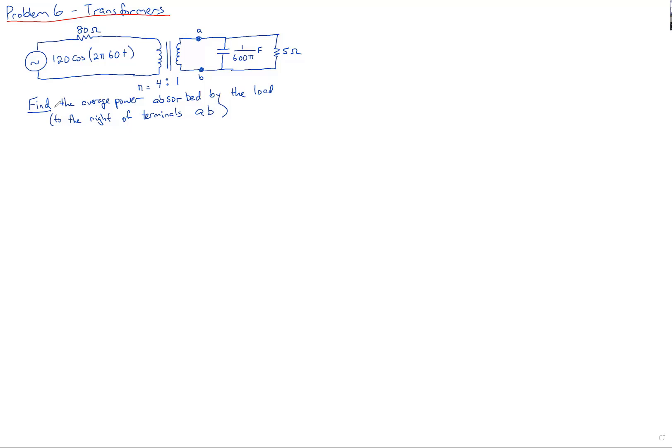The combination of the capacitor and resistor is our load. Big picture: whenever you're solving power problems, you want to start off by determining the voltage across and the current through whatever load, and do that in RMS units. So our first step is to transform this from the time domain into the frequency domain.